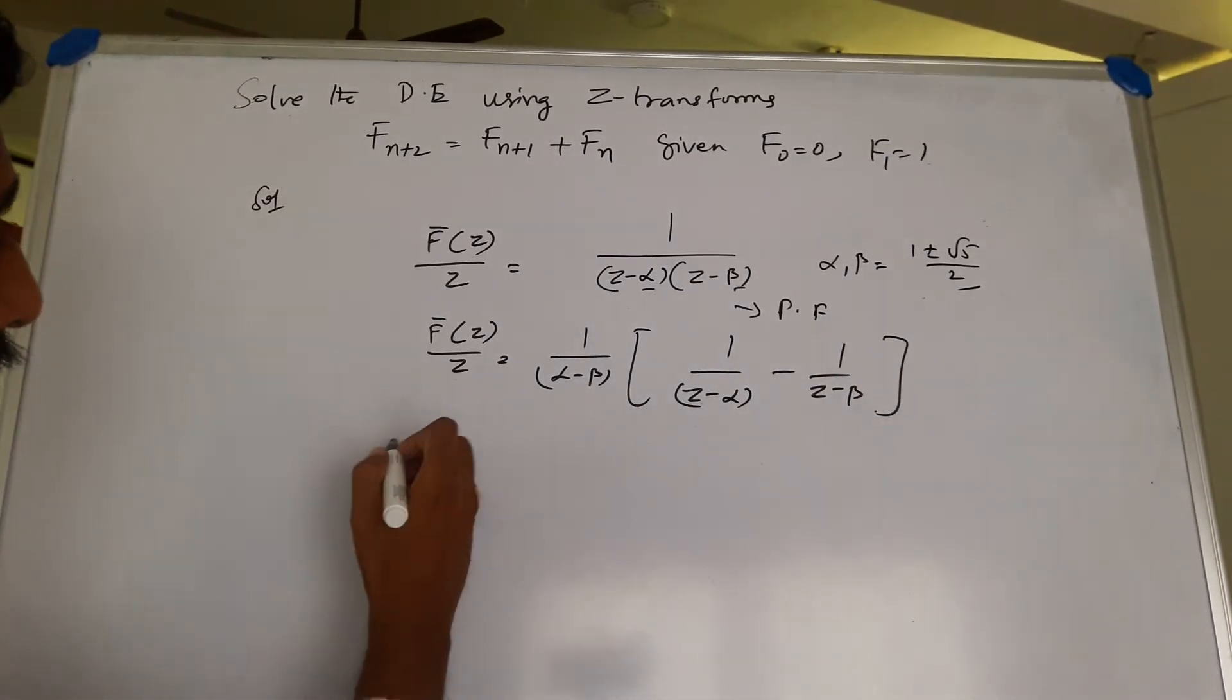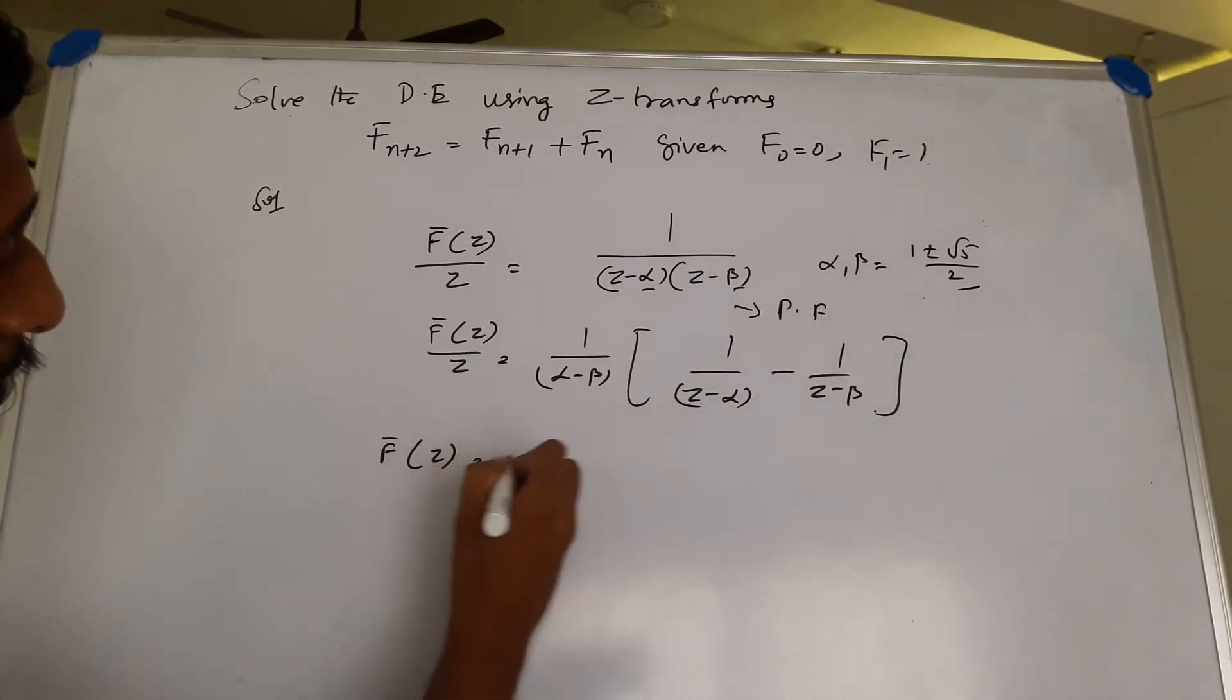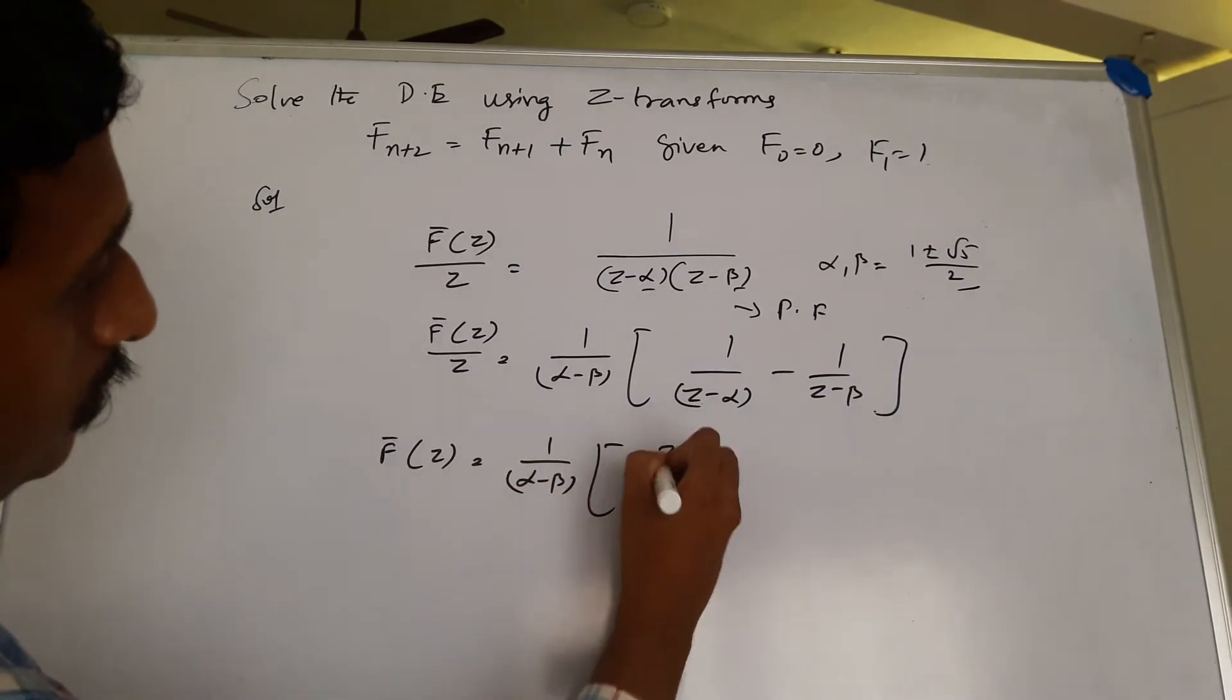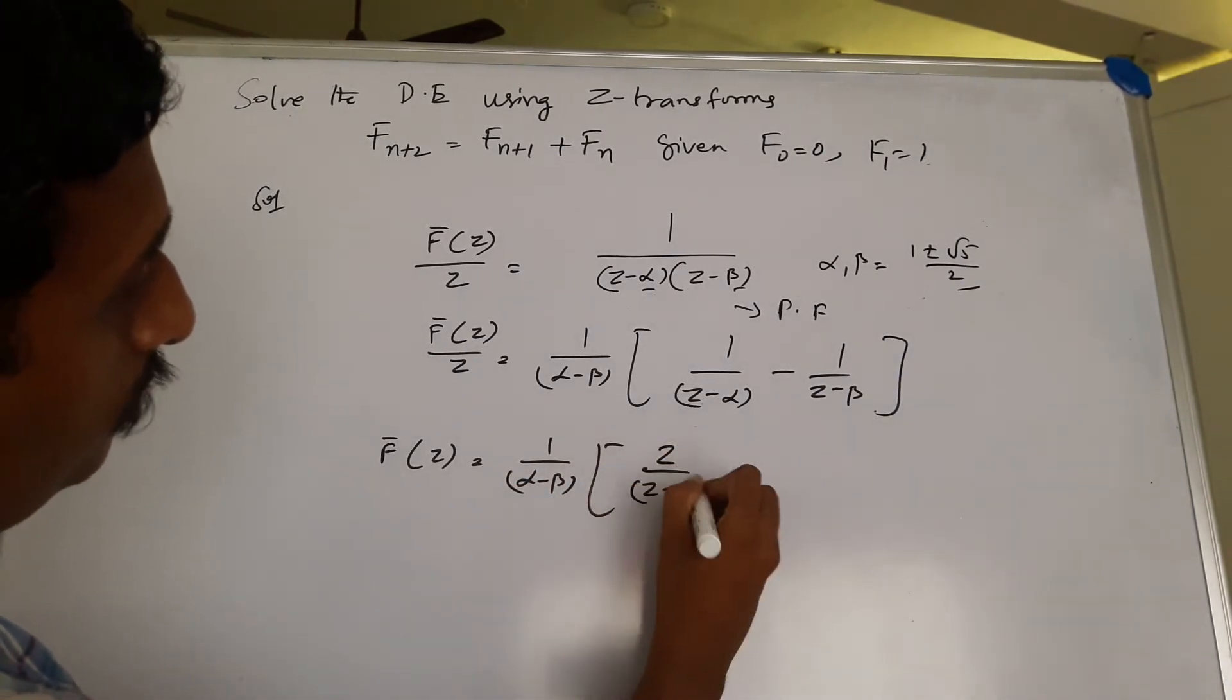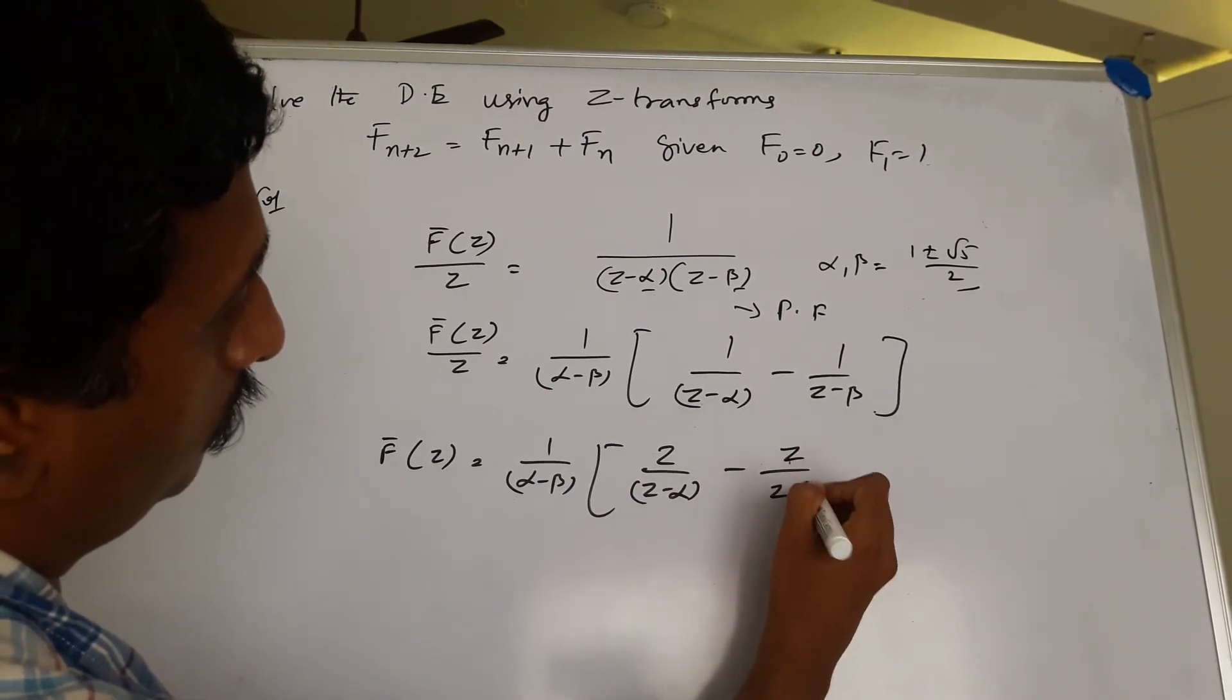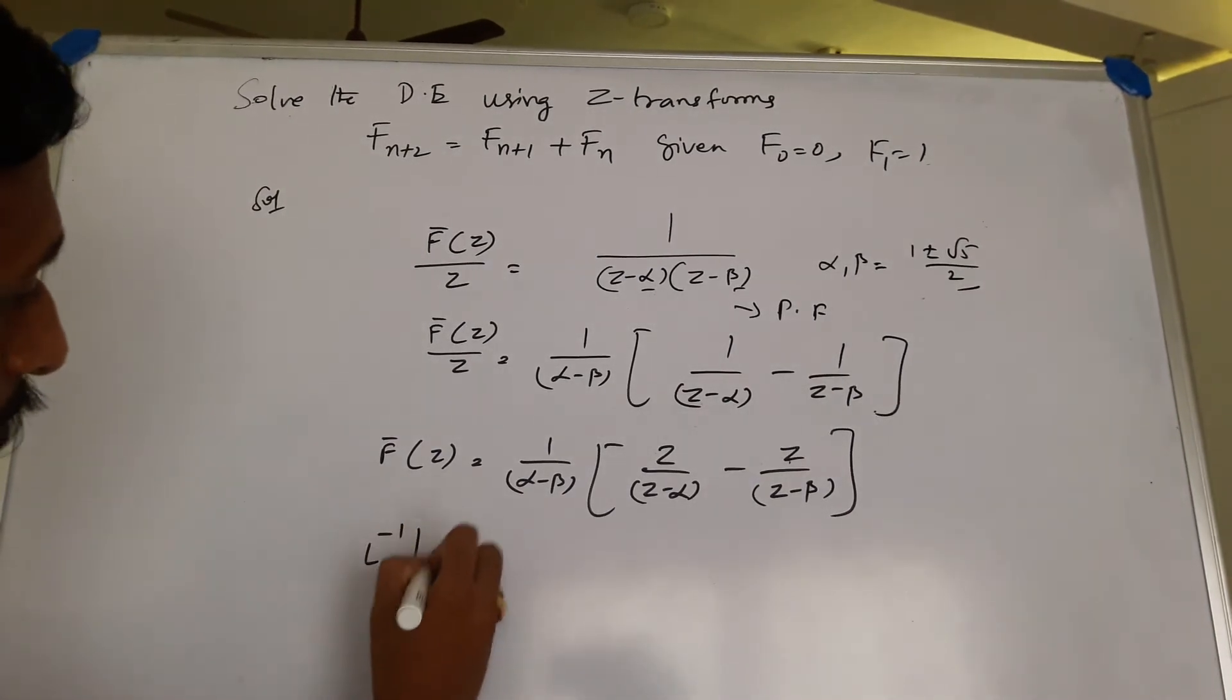So now if you take z on the other side, I get 1/(α - β) times [α/(z - α) - β/(z - β)], and taking the inverse of this.